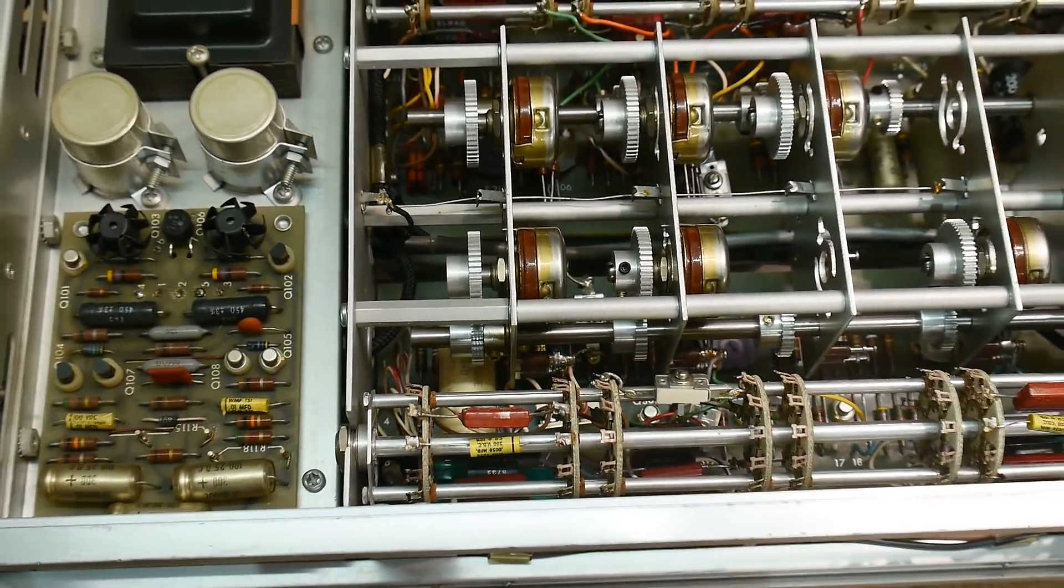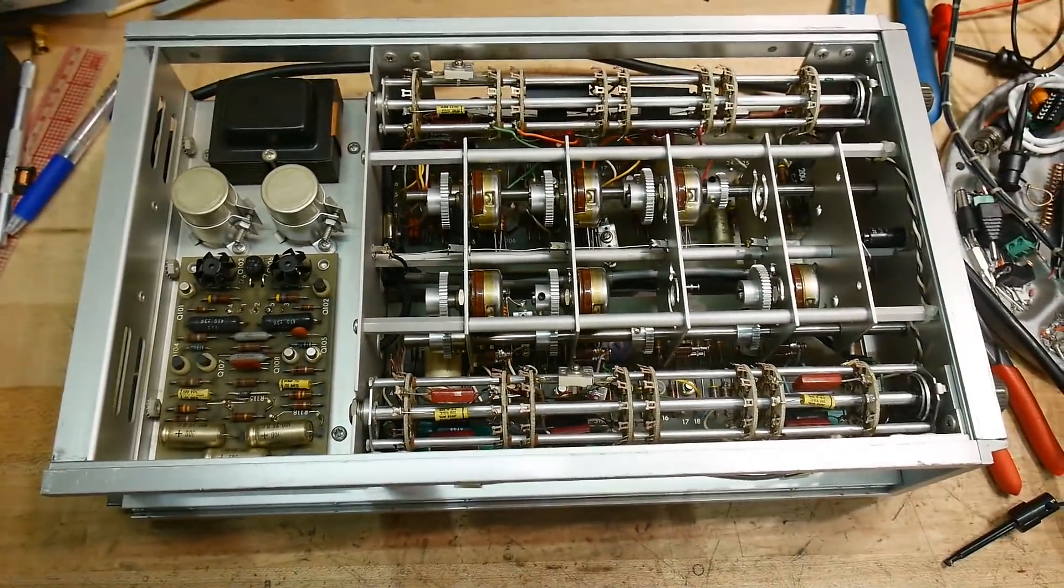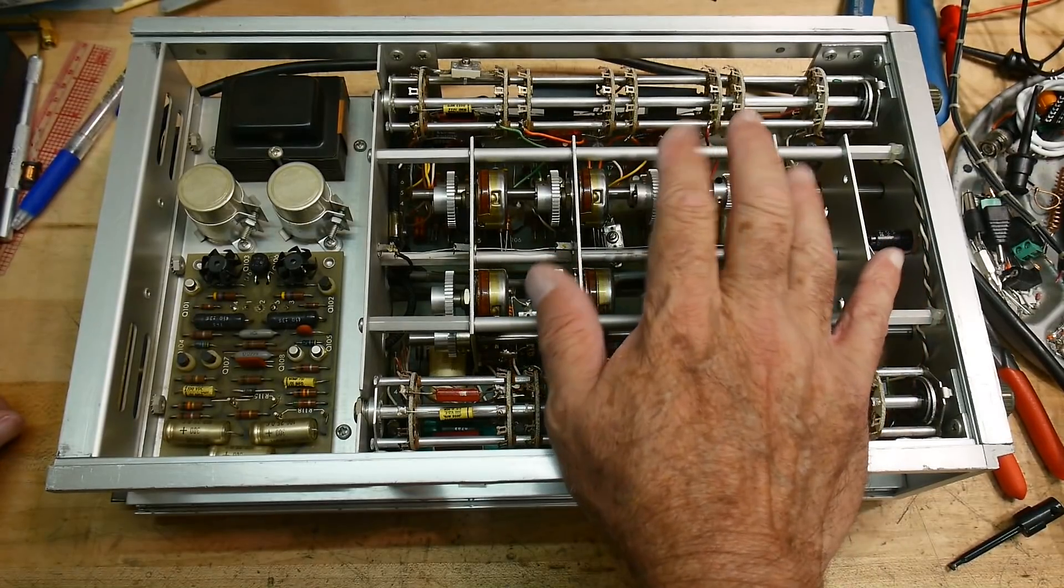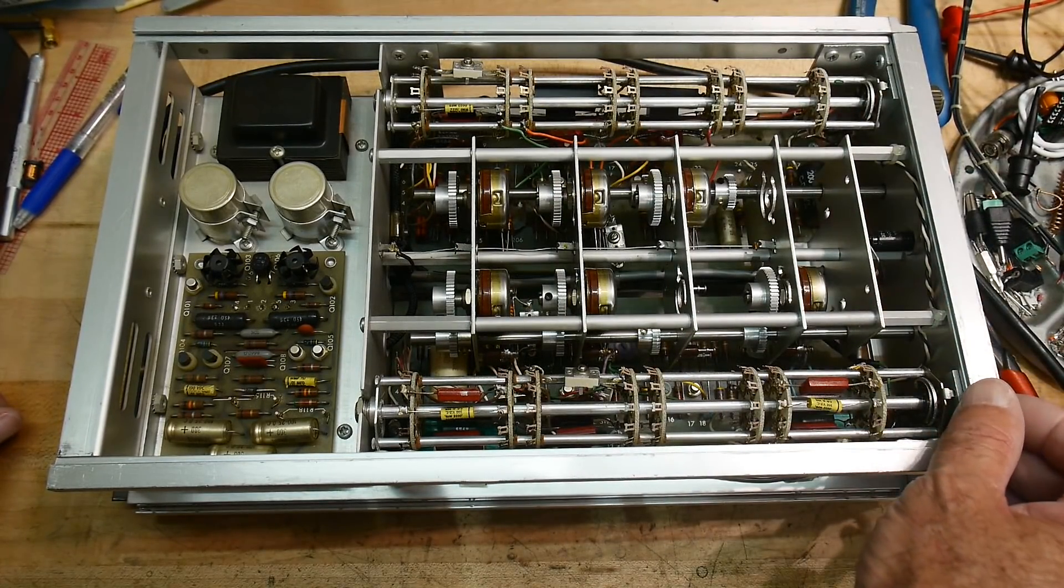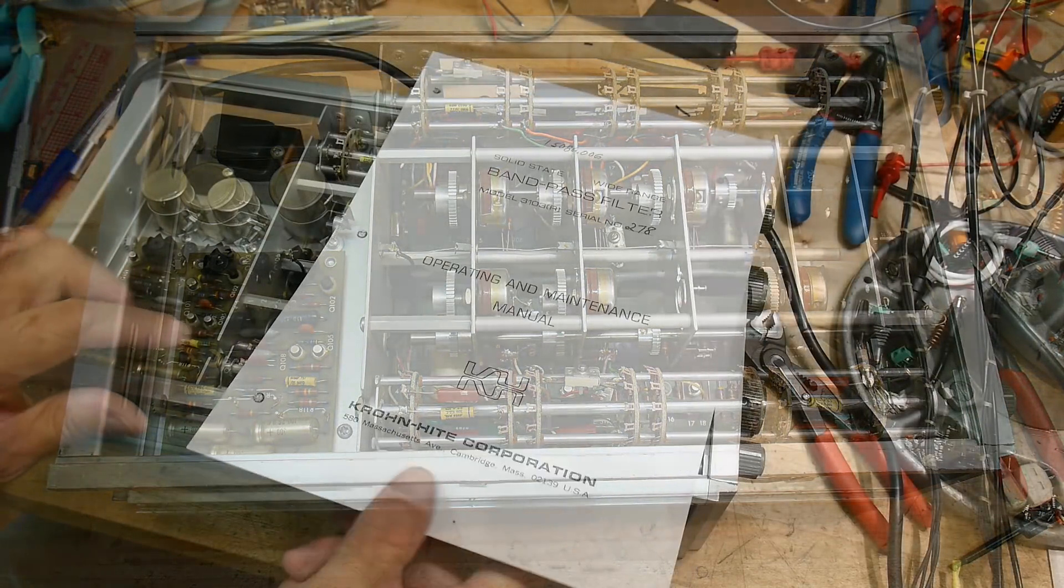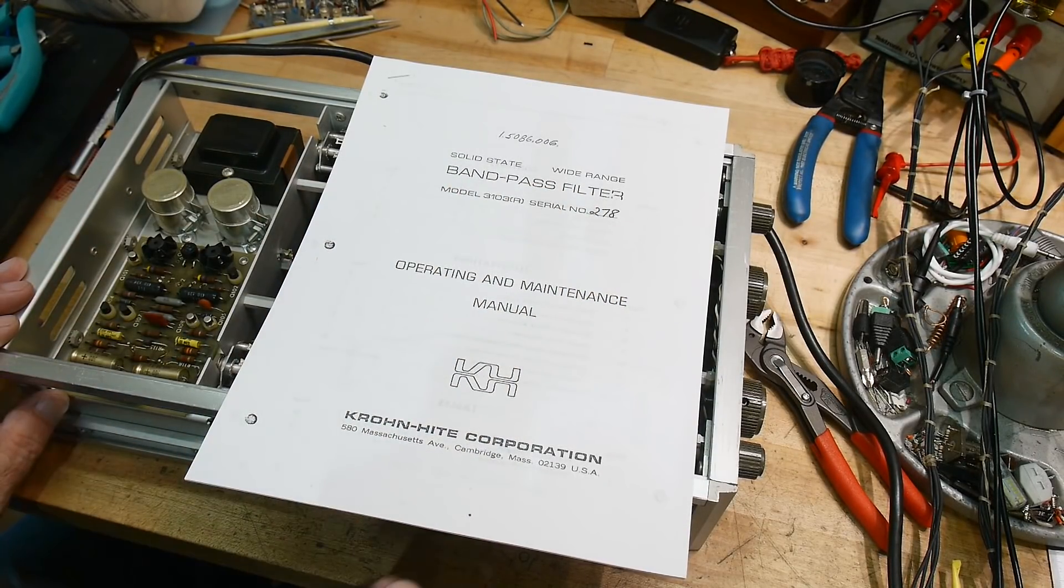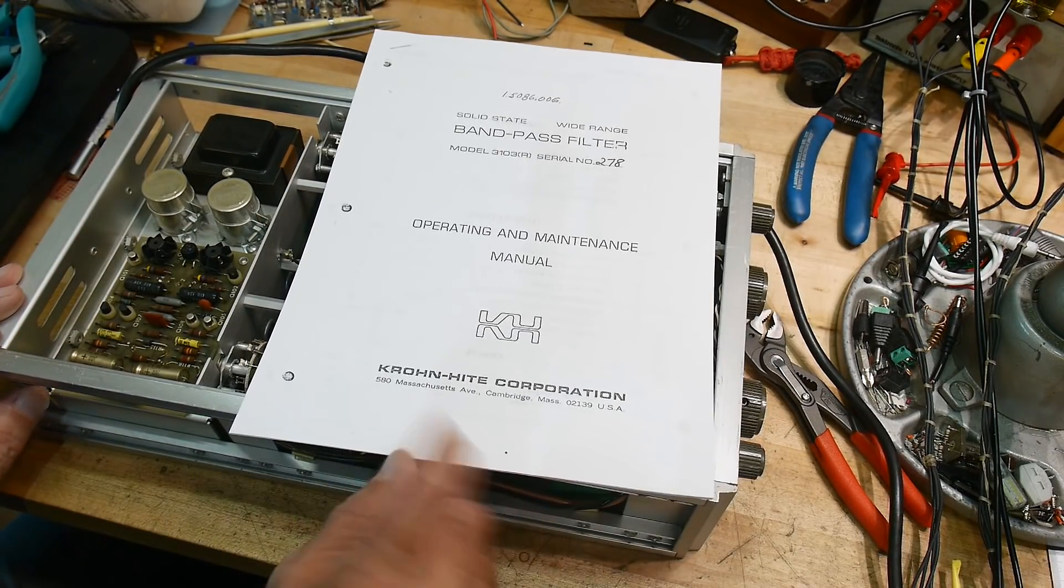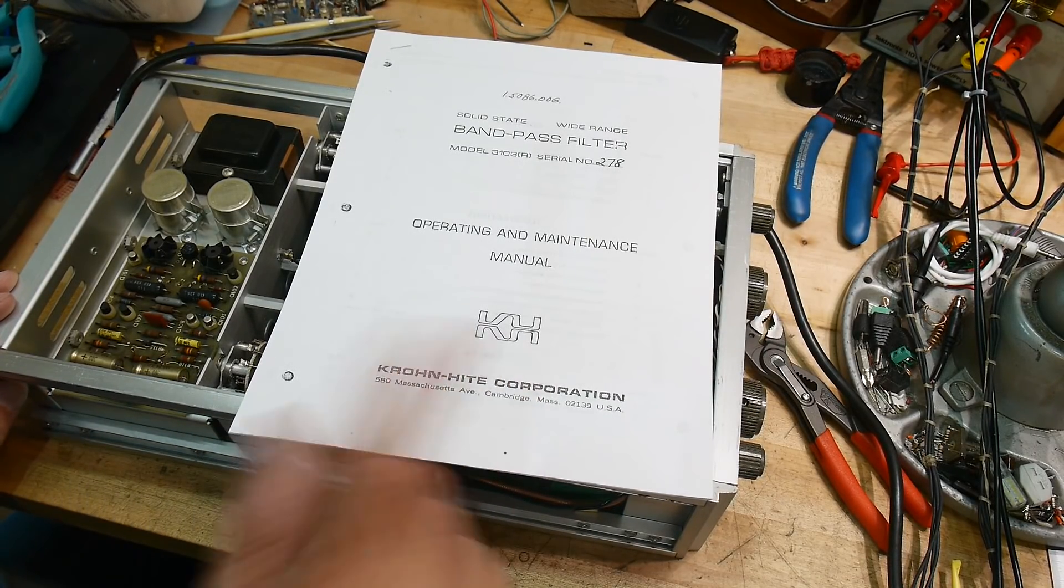All right. So, yeah, this will be in the next up and coming video, I think. I think I will get this guy up and running so we can send some signals through them and see if it works. All right. We've got a manual. Solid state, wide range, bandpass filter. Mr. Krohn and Mr. Hite created the Krohn-Hite Corporation. They were both MIT graduates. So, of course, they have set up shop in Cambridge, Massachusetts.